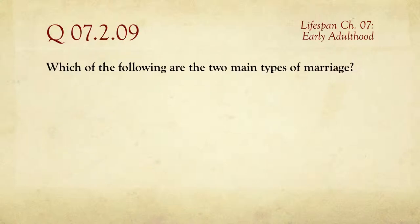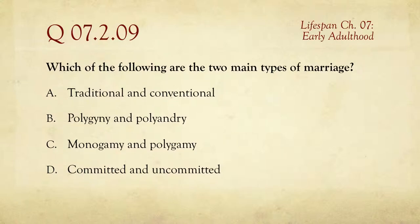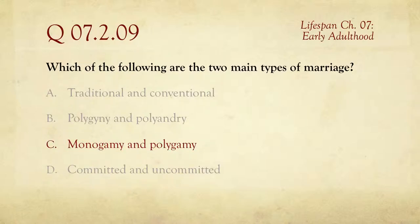Question number nine: which of the following are the two main types of marriage? Traditional and conventional, polygyny and polyandry, monogamy and polygamy, or committed and uncommitted. Polygyny means more than one wife, and polyandry is more than one husband. The two main types are in fact monogamy and polygamy. We're in Utah so we have a different view on polygamy, but there are still many countries where polygamy is legal and is a common social practice. Polygyny and polyandry are both versions of polygamy.